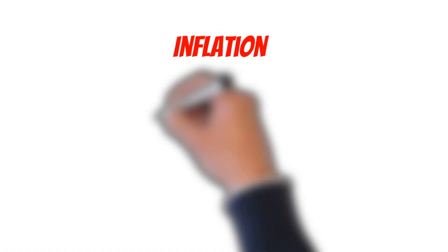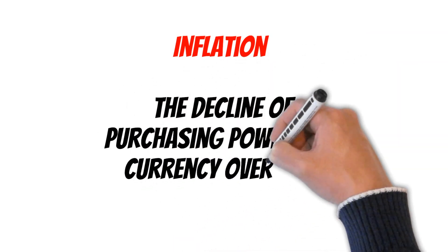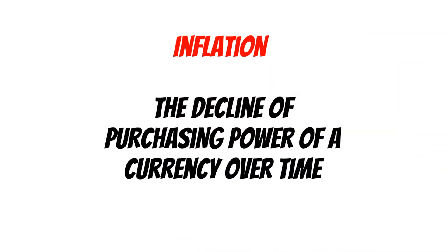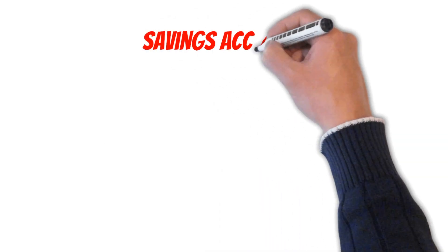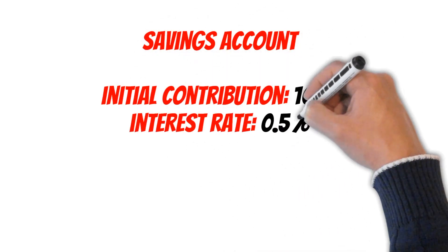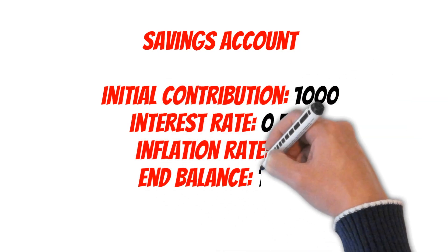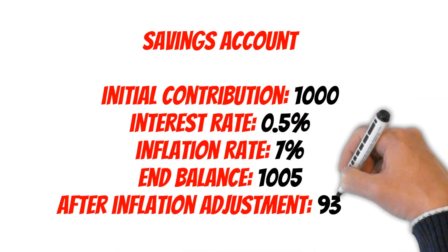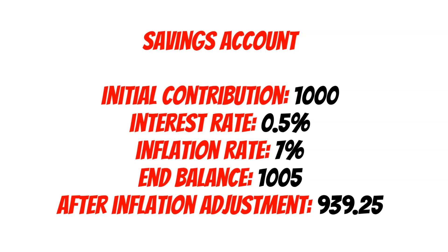Forget the fact that you're making 95 extra — the most important thing actually is beating inflation. Inflation is the decline of purchasing power of a currency over time. Basically, what that means is what you can buy with a thousand US dollars today, next year you'll need more money to buy that same product. We factored in seven percent for inflation, and after inflation your one thousand dollars after one year alone is now valued at nine hundred and thirty-nine dollars.